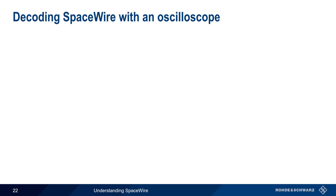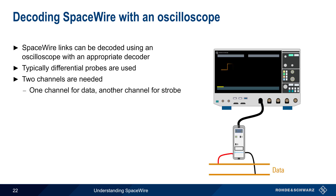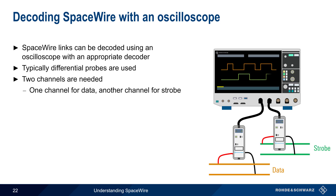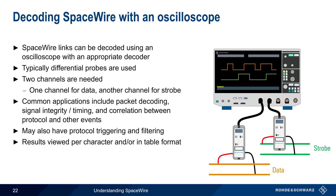Before we conclude, let's take a minute to discuss how SpaceWire links can be analyzed and decoded using an oscilloscope. Since SpaceWire uses differential links, in most cases differential probes are used. Two channels are needed: one for the data signal and one for the strobe signal. Oscilloscopes can provide a great deal of information about a SpaceWire link, including decoding of packets, measurements of electrical properties such as timing or slew rate, and information regarding the timing of protocol and non-protocol events. Triggering on or filtering SpaceWire characters or packets based on message type or content is also a helpful feature. Many scopes also allow results to be viewed per character and/or in table format, and allow results to be exported in a variety of file formats.